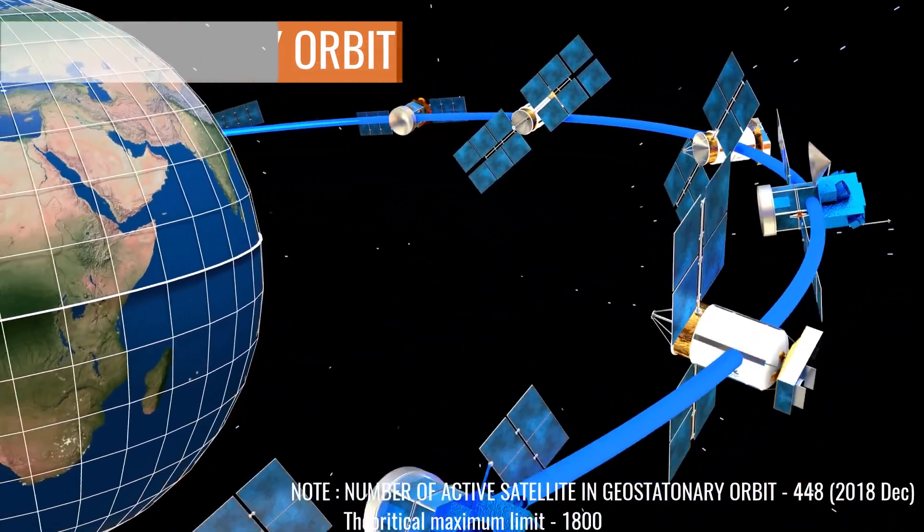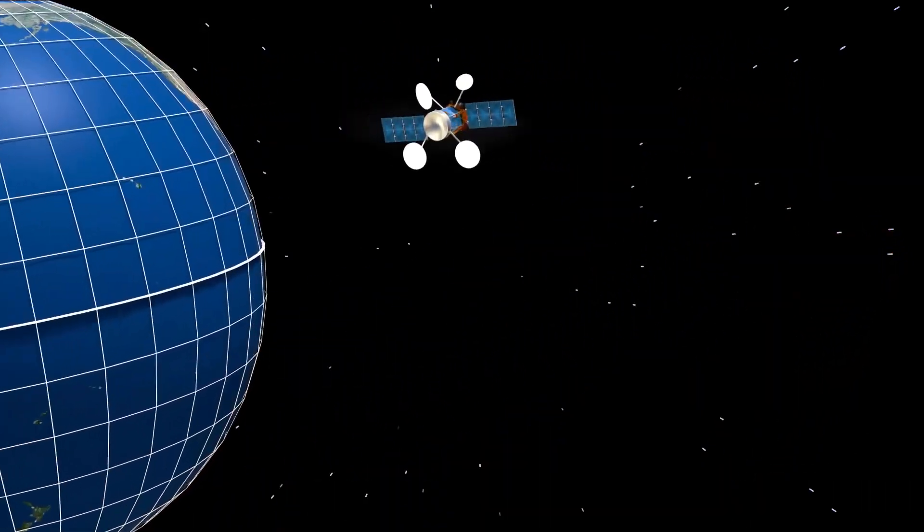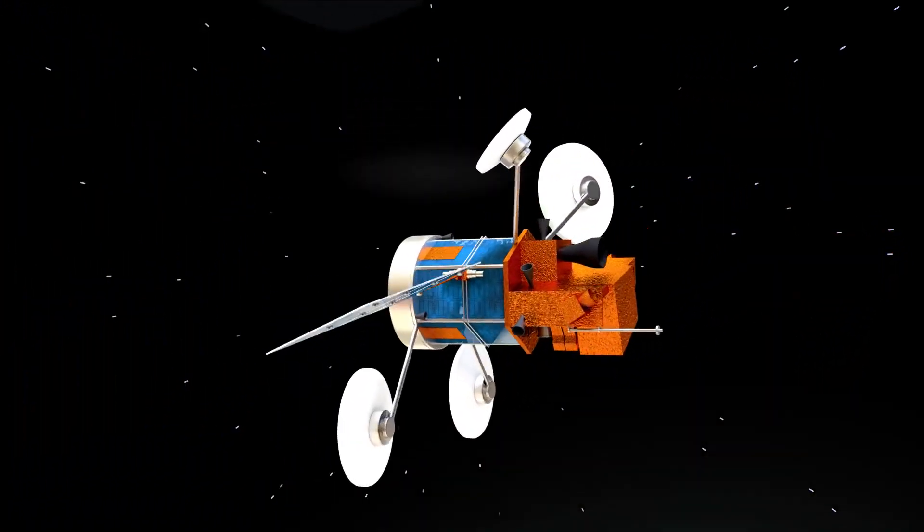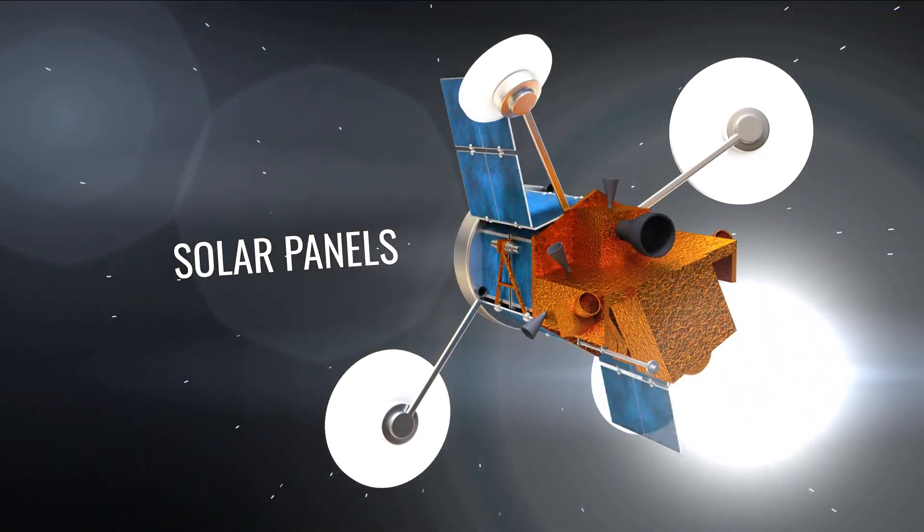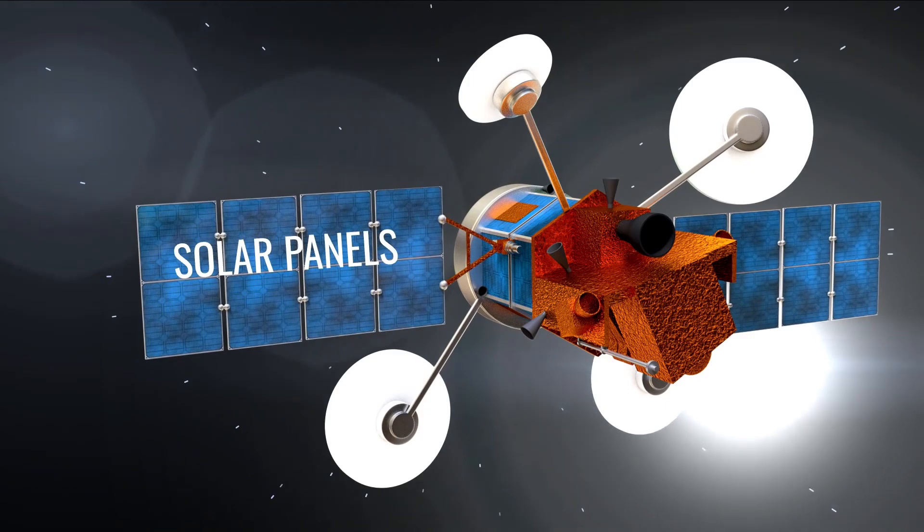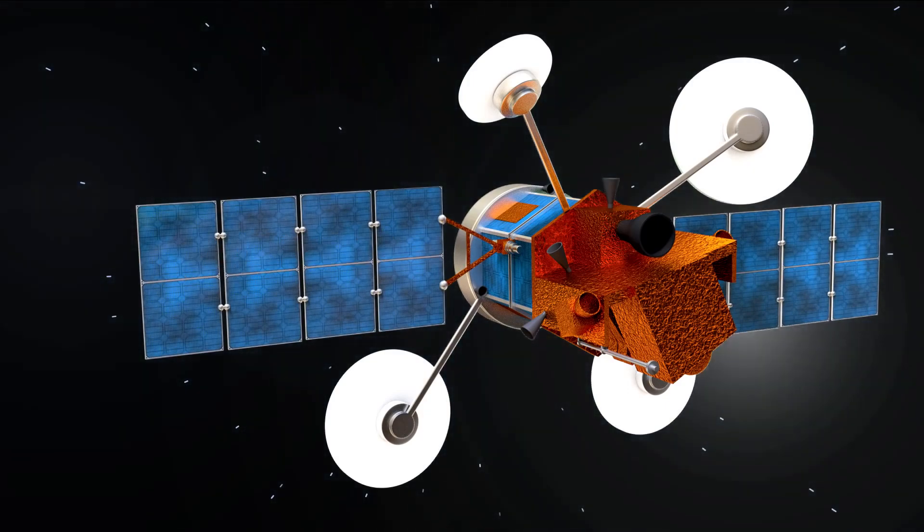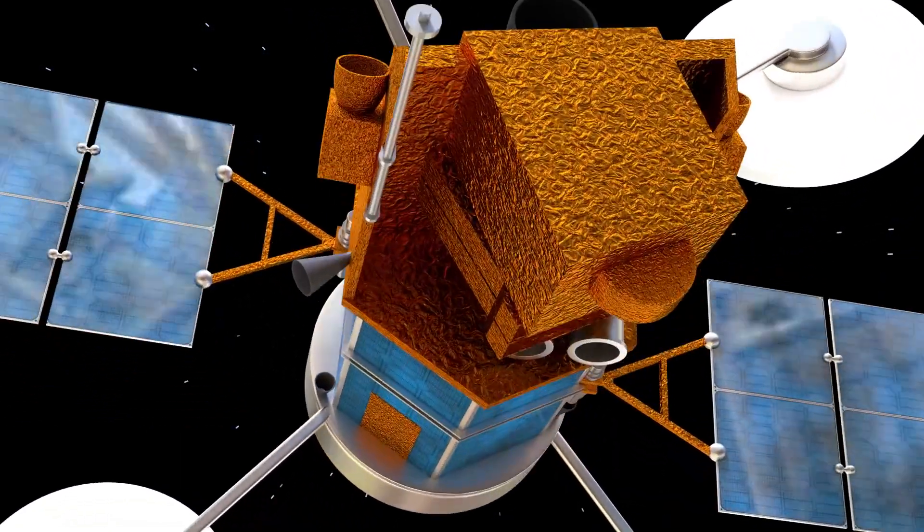Now, let's find out a few things about the satellite itself. The energy required for a satellite mostly comes from its solar panels. However, if the satellite is not facing the Sun, a battery pack helps to continue its operations.